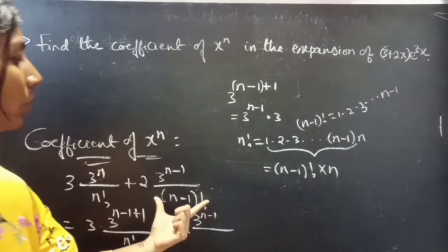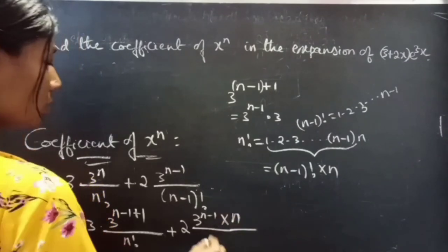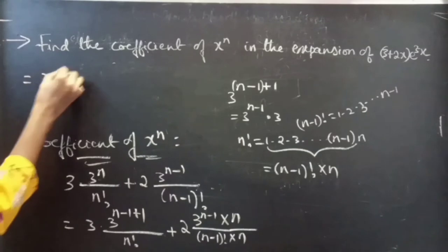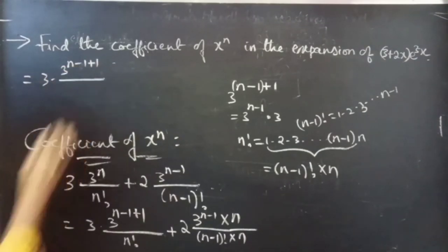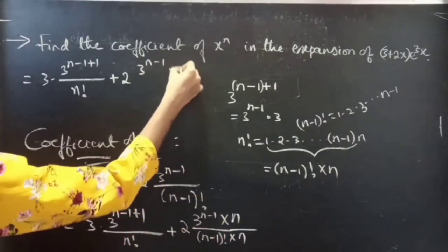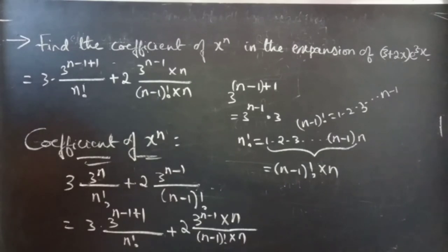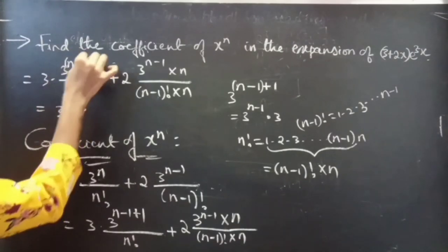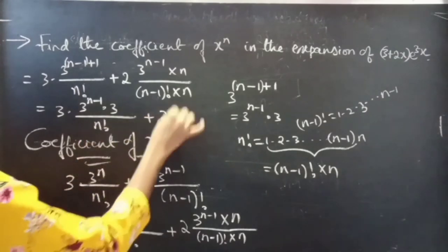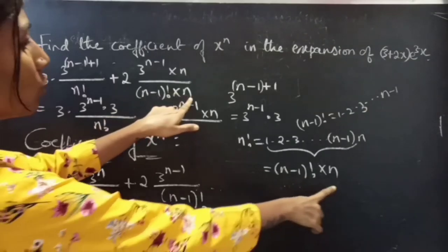In order to make this replacement, we multiply n to both the numerator and denominator of the second term. So we write: 3 into 3 power (n minus 1) into 3 by n factorial plus 2 into 3 power (n minus 1) into n by n into (n minus 1) factorial. And since n into (n minus 1) factorial equals n factorial, we have replaced the denominator of the second term with n factorial.